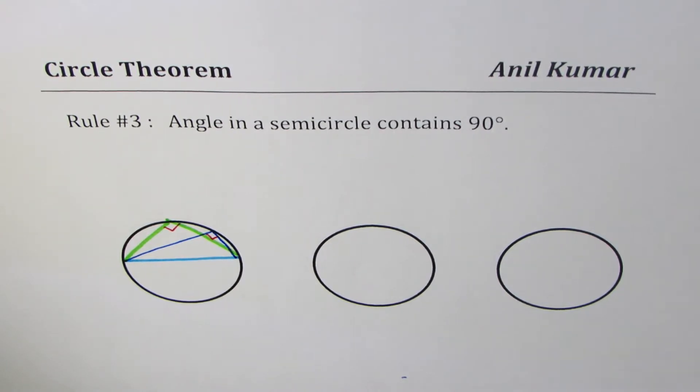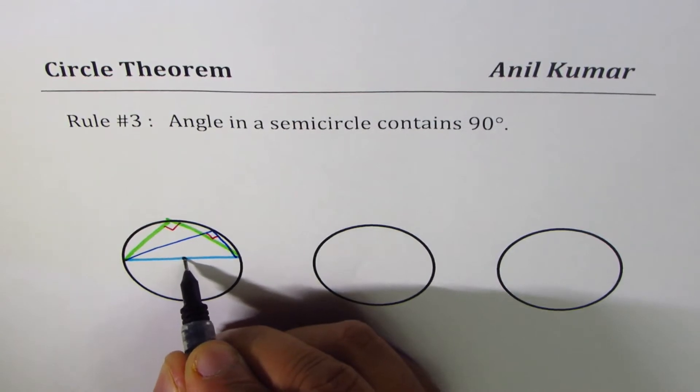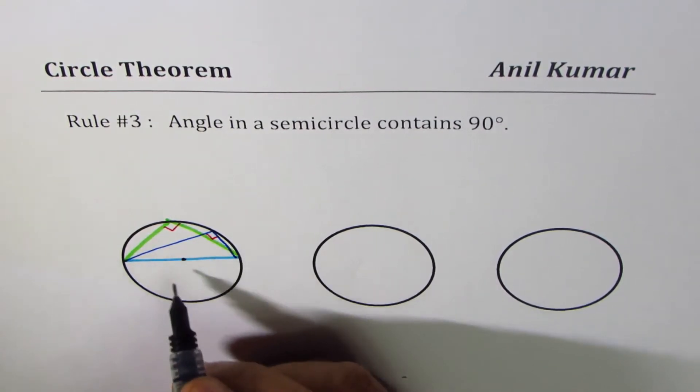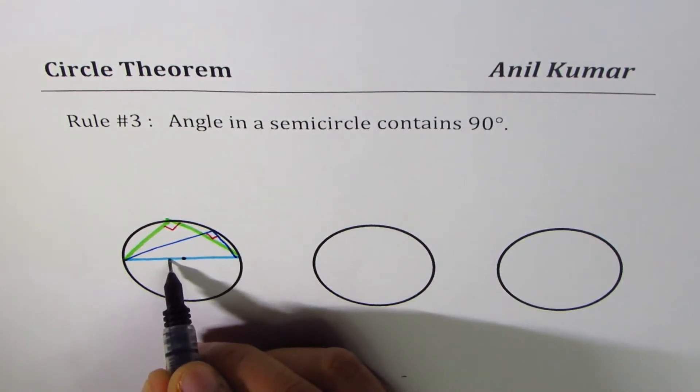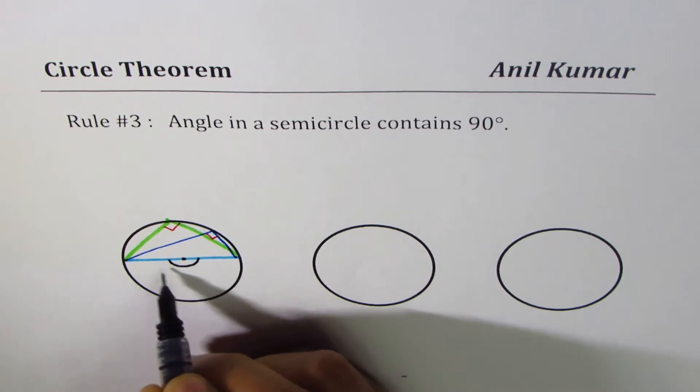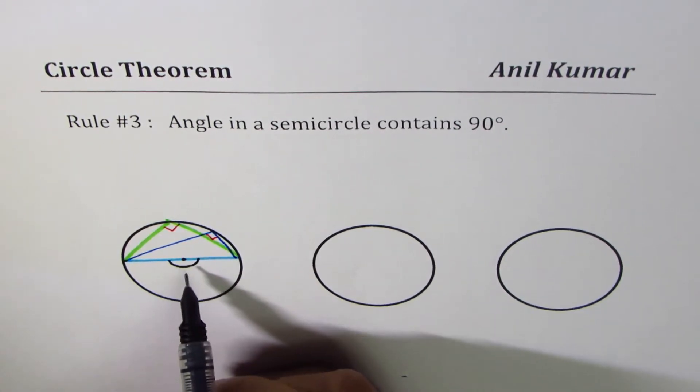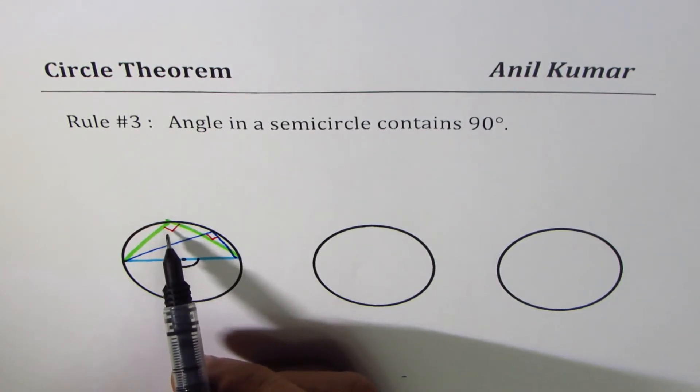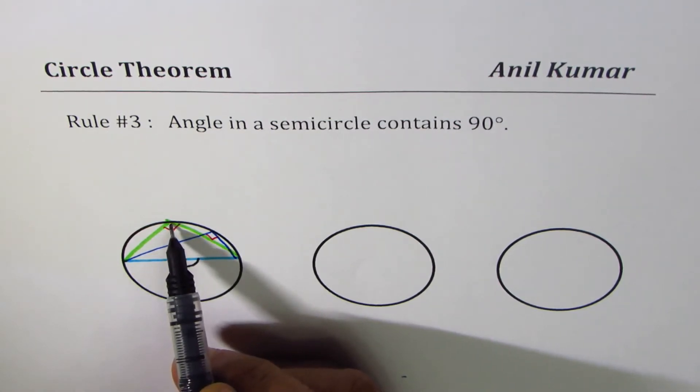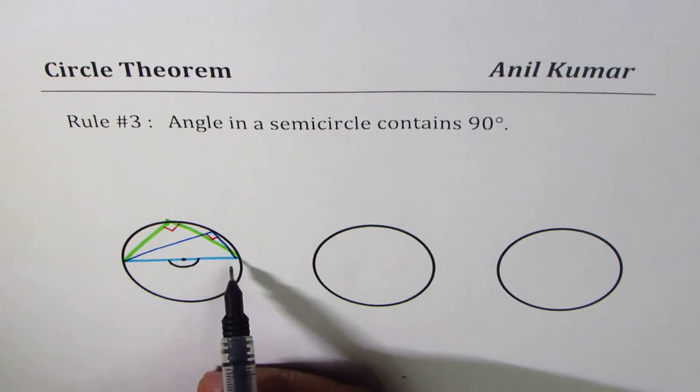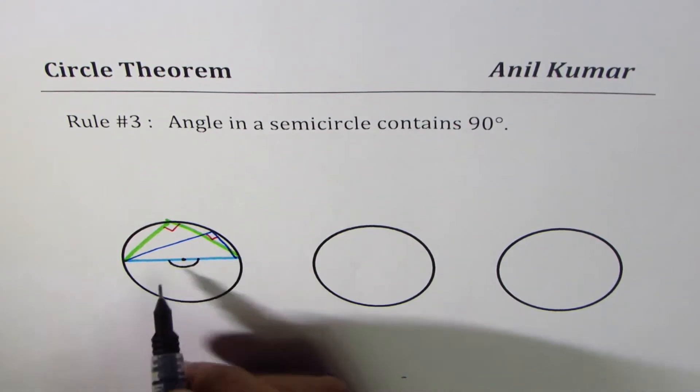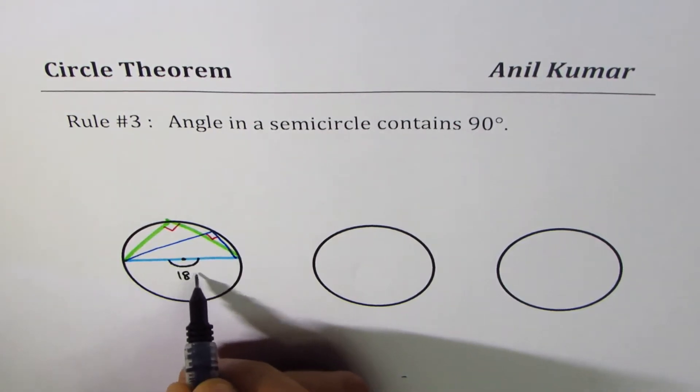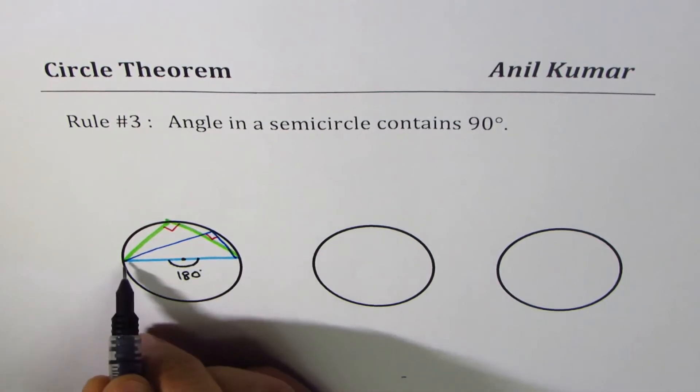Now it does make sense from the previous rule which we learned. We have learned that the angle at the center is twice the angle which is formed by a point on the circumference with a chord.